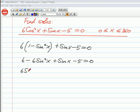And the sinx goes across as a minus, so it's minus sinx. And 6 minus 5 gives you 1, goes across as a minus 1.